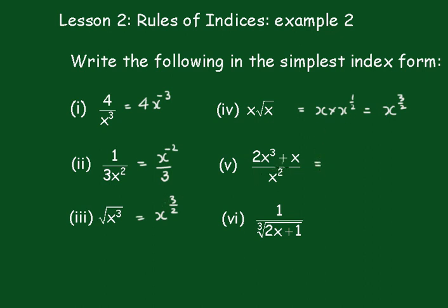This is a very important one. Here we'll split the two and we'll write this 2x cubed on x squared plus x on x squared. And that becomes 2x plus, now subtracting the indices we get 1 take away 2 which is minus 1, so x to the minus 1.